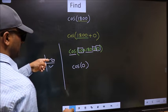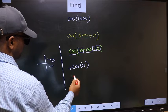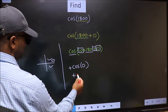And in the first quadrant, cos is positive. So we should put plus. So plus cos 0 is 1. This is our answer.